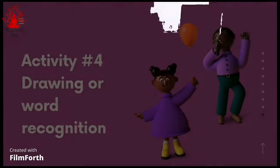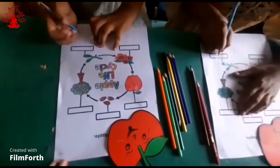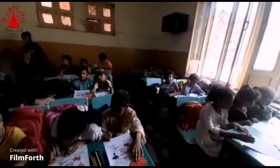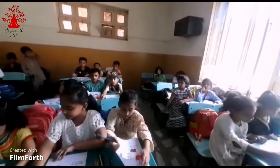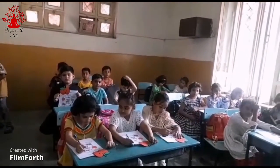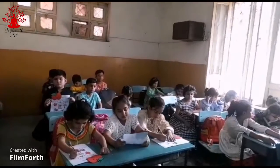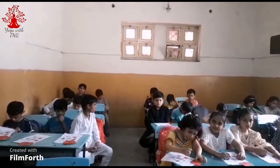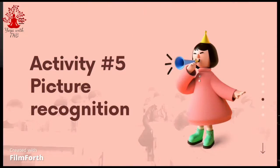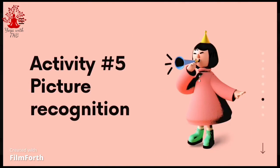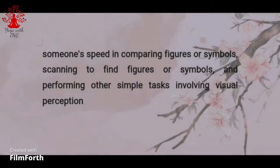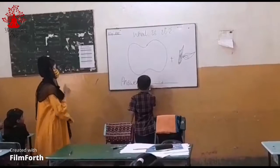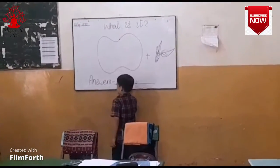Activity number 4 hai drawing. Isme hum logon ne bachon ko drawing ke liye pages diye jinke oopar shapes bani hui thin. Hum logon ne yeh page isliye diye kyonki bahut se bachche mathematics mein achche ho sakte hain, bahut se bachche word recognition mein achche ho sakte hain, aur shayad wo painting mein achche na hon. Board mein humne ek apple ki shape banai aur ek bachche ko kaha ki isko guess karo — yeh kaun si shape bani hui hai. Jab ki bachche ne board ke oopar apple likha kyonki wo is cheez ko pehchaan gaya tha.